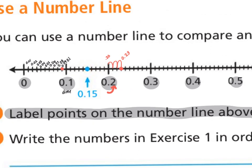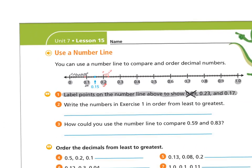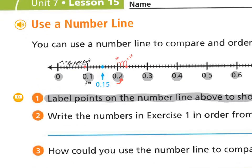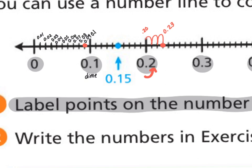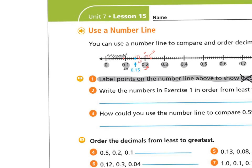Pause this video and see if you can place the point for seventeen hundredths on the number line, then press play to see if you did it correctly. For seventeen hundredths, you have a little bit of a tell because fifteen hundredths is already marked. So I'm going to start at fifteen hundredths and count: sixteen hundredths, seventeen hundredths. I'll place my dot there and label it. You should have all three points labeled.